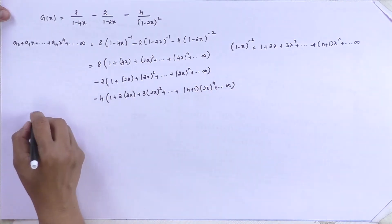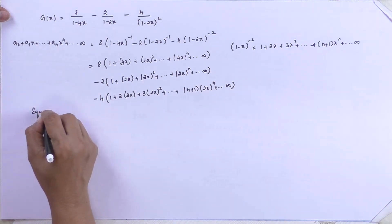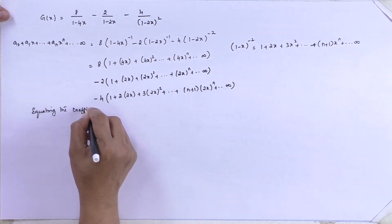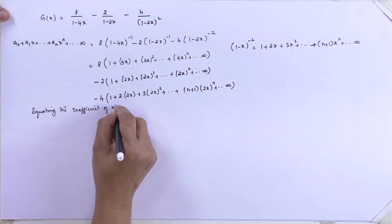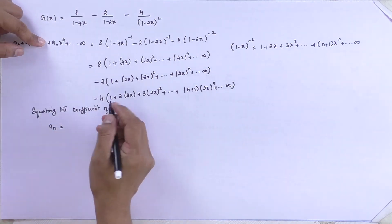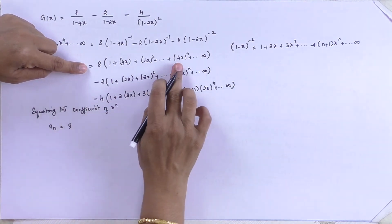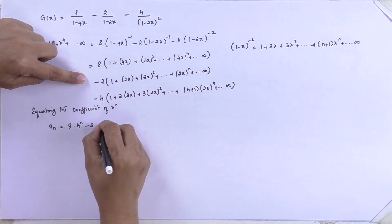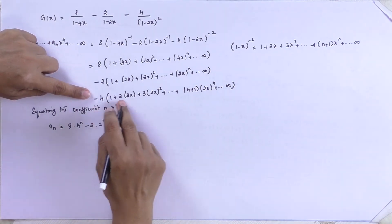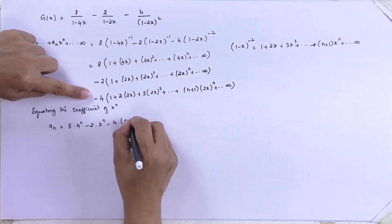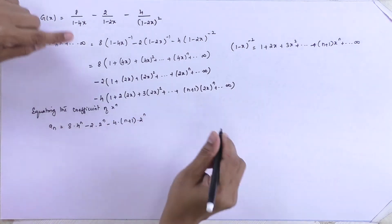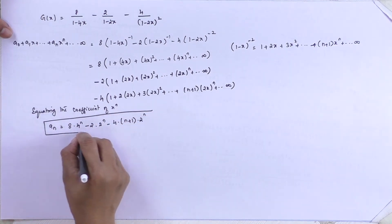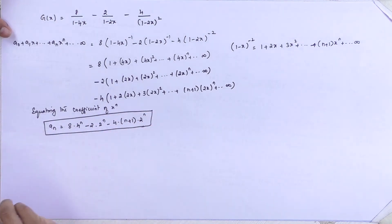By equating the coefficient of x^n we get: a_n is equal to 8 times the coefficient of x^n, which is 8·4^n, minus 2 times the coefficient of x^n, which is 2·2^n, minus 4 times the coefficient from the squared term, which is (n+1)·2^n. That is the coefficient, and this is the required solution for a_n.